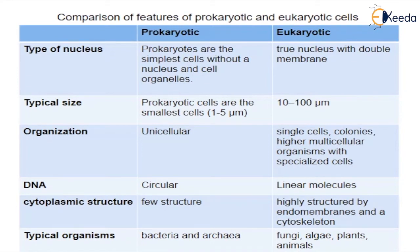Eukaryotes are sophisticated cells with a well-defined nucleus and cell organelles. The cells are comparatively larger in size, nearly 10 to 100 micrometers. They range from unicellular to multicellular in nature, available in colonies, and higher multicellular organisms with specialized cells. Their DNA molecules are linear, and cytoplasmic structure is highly organized by endomembranes and a cytoskeleton. Typical organisms are fungi, algae, plants and animals, ranging from tiny yeast to giant organisms. The main distinguished feature of eukaryotes is compartmentalization — the presence of membrane-bound organelles in which specific activities take place.